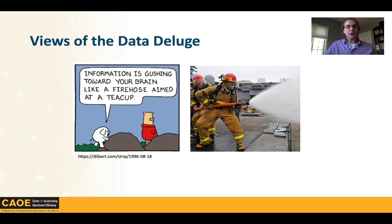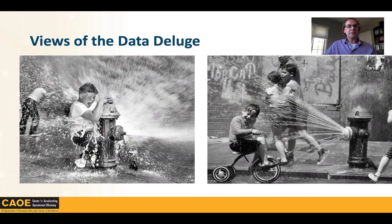People often think about this as shown in a Dilbert cartoon where Dogbert talks about information gushing towards your brain like a fire hose aimed at a teacup. But instead of thinking about it that way, I think we should think about how we can play in this data deluge — how can we take advantage of it and find fun, interesting, exciting applications, and translate them into forms people can understand and explore?